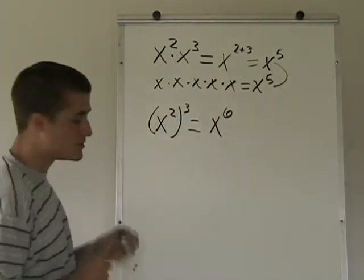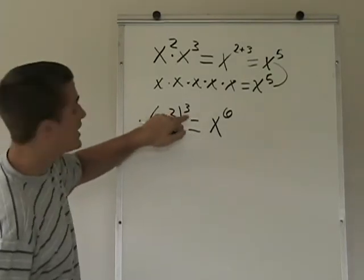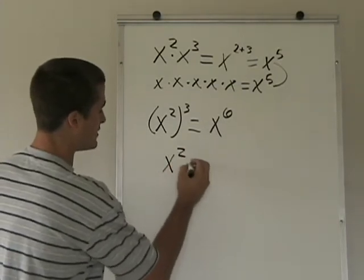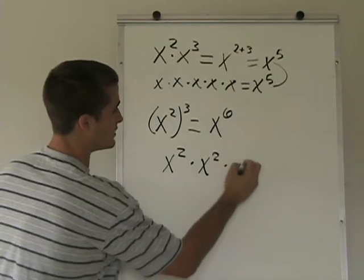When you think about it, what you're really doing is you're taking x squared three times, because it's to the third power. So you're taking x squared times x squared times x squared.